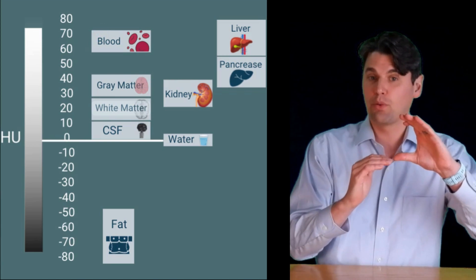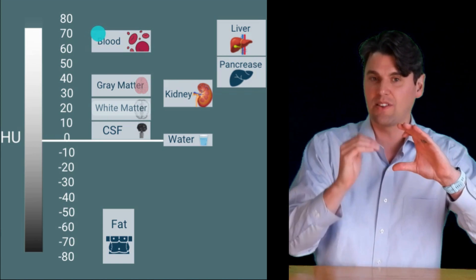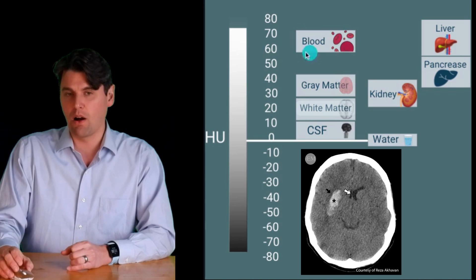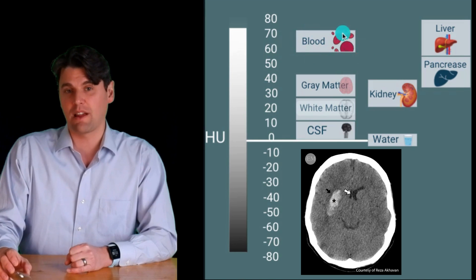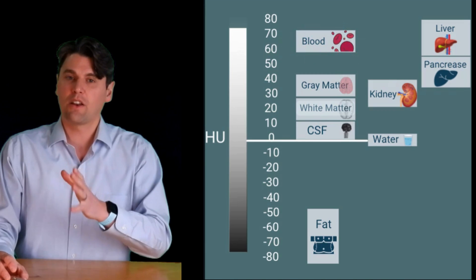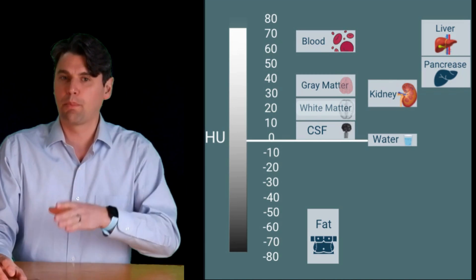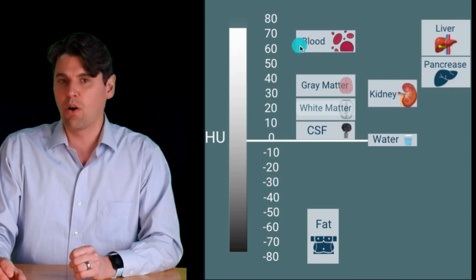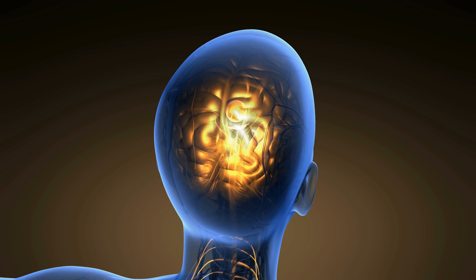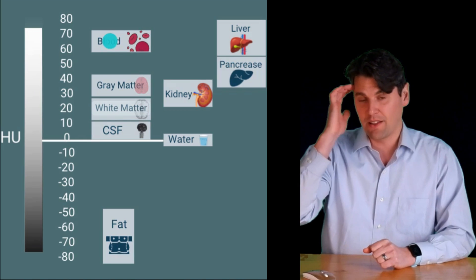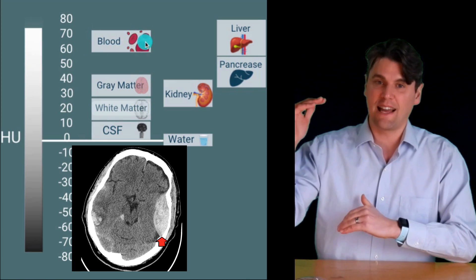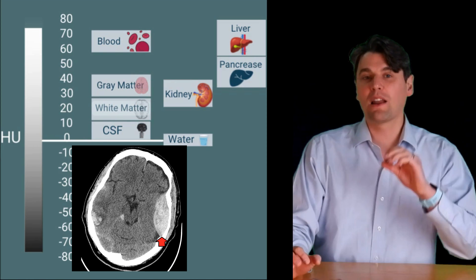With a window width of 80 and a center of 40, that means you're looking at values between 0 and 80 Hounsfield units — anything outside that range is saturated. Blood sits at the very upper range of this window and will start to saturate, meaning you can tell something is brighter but it won't be well differentiated. Bone will also be saturated out, so bone and blood could potentially be confused when using a window of 0 to 80.